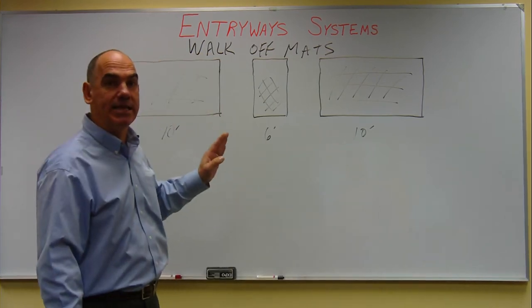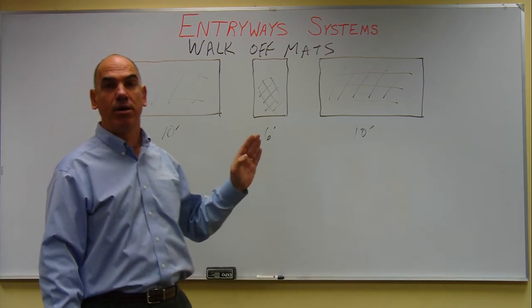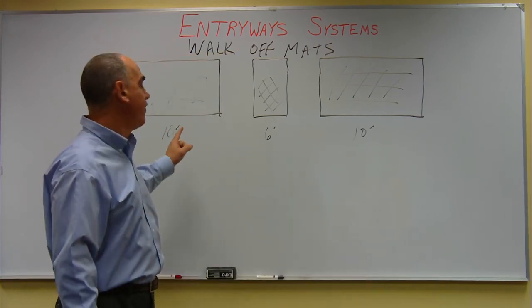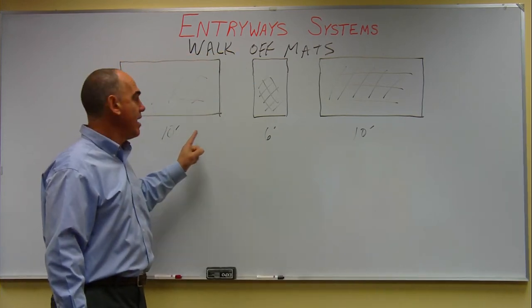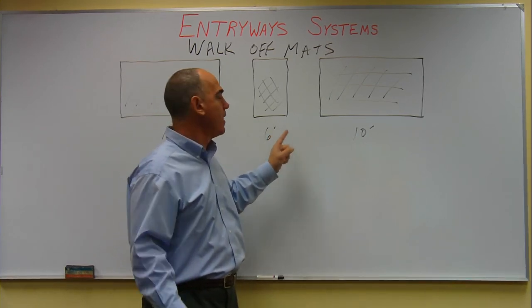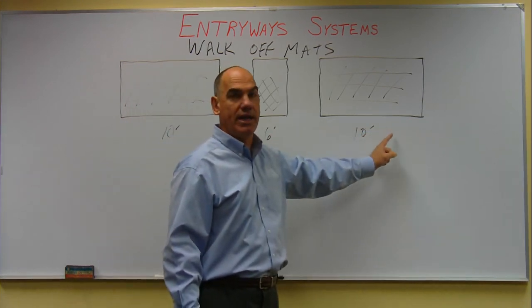They want at least 18 feet of walk-off mat prior, during, and into the building. That means they want about a 10-footer outside, they want a little 6-footer inside. I know this is 26 feet, but if these were 18, it would be even longer. And they want another 10-footer inside the building.